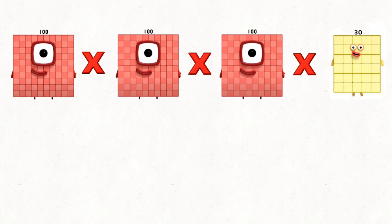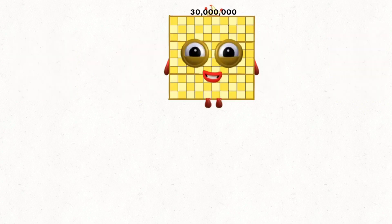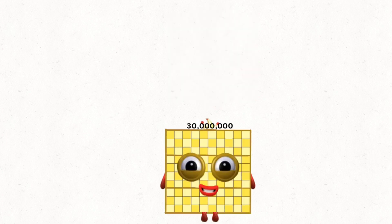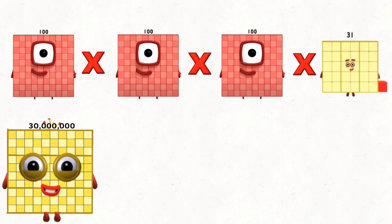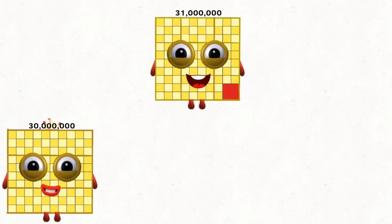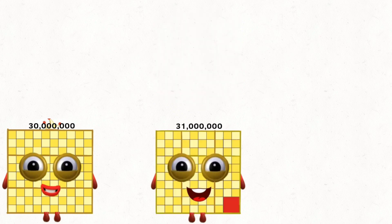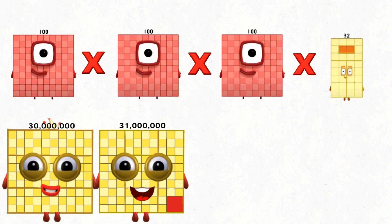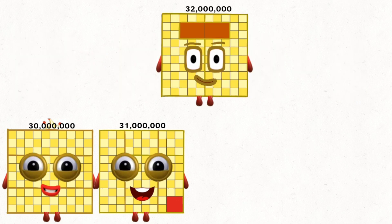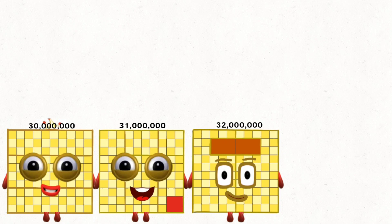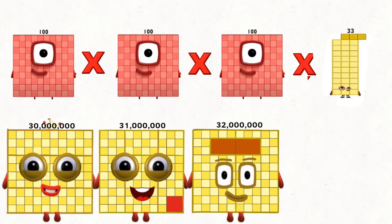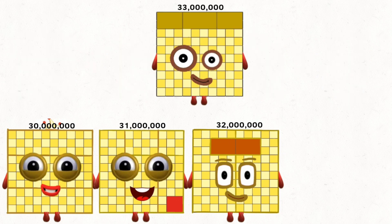100 times 100 times 100 times 30 equals 30 million. 100 times 100 times 100 times 31 equals 31 million. 100 times 100 times 100 times 32 equals 32 million. 100 times 100 times 100 times 33 equals 33 million.